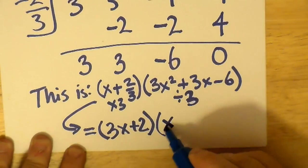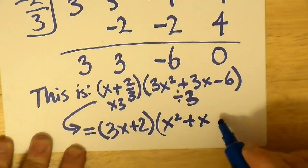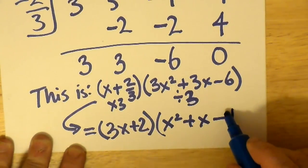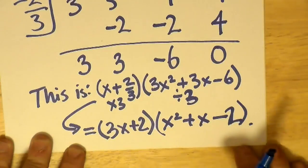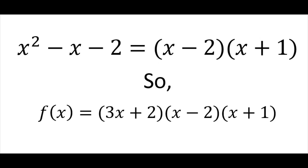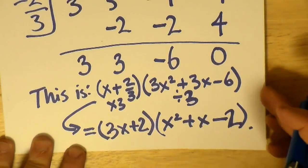We divide 3 out of the second factor and multiply 3 into the first. We did not change the value of the overall two factors.